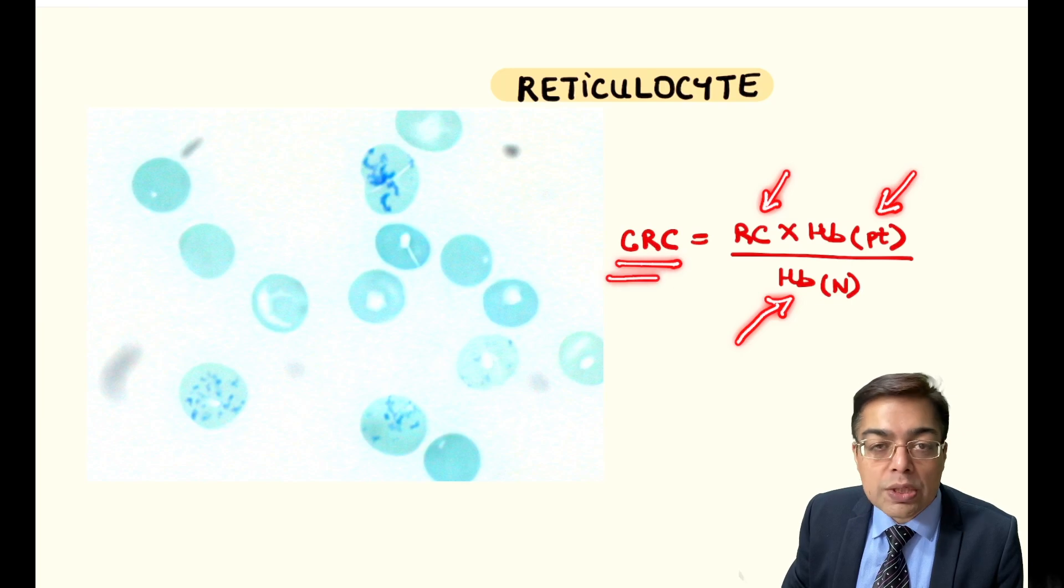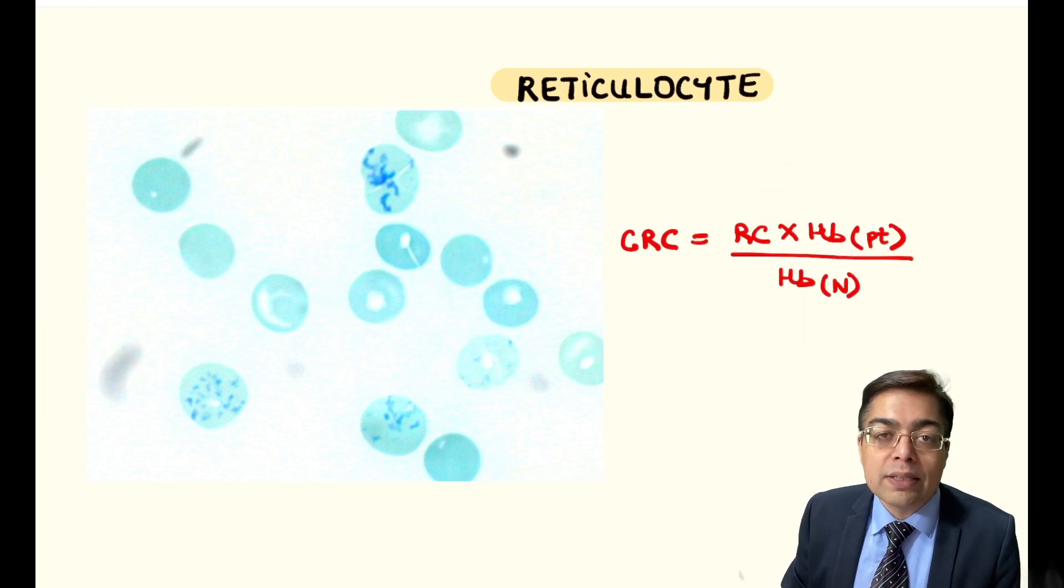So this value, corrected reticulocyte count, is far more important than just the reticulocyte percentage for the calculation of the bone marrow activity in case of an individual. Now what you need to answer for me is a simple question appearing on your screen.